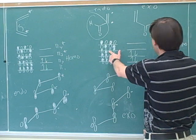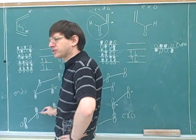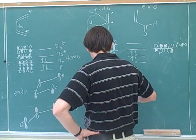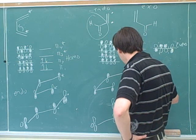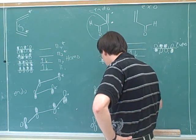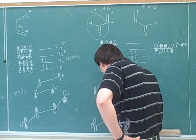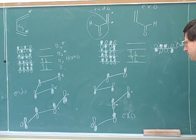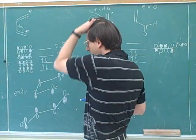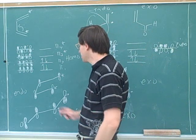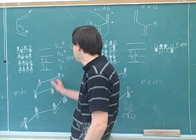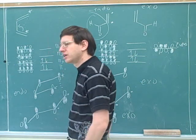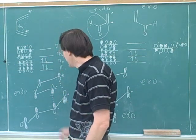Remember, these are really equivalent to each other because they both have two vertical nodes. So that gives us this picture here, and then we can do the same thing over here, filling in the shaded and unshaded orbitals accordingly.